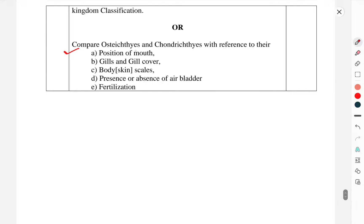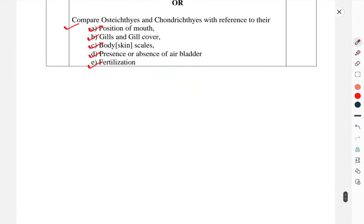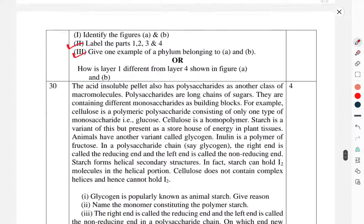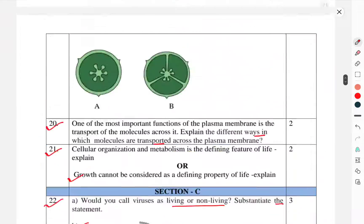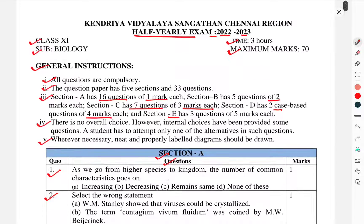Or, compare Osteichthyes and Chondrichthyes with reference to their position of mouth, gills and gill cover, body skin scales, presence or absence of air bladder, and fertilization. So this was the question paper of Class 11 subject Biology, half-yearly exam question paper. That's enough for this one. Thank you.